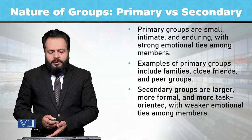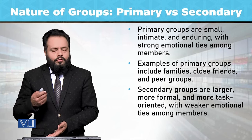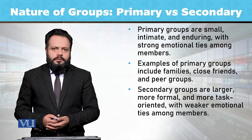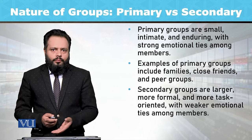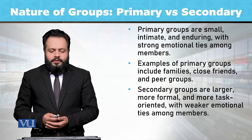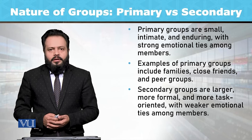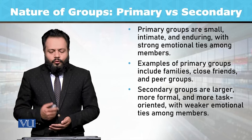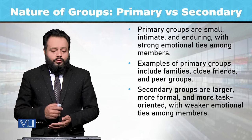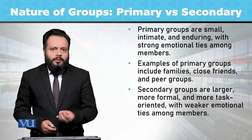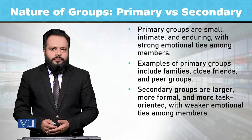For example, families, close friends and peer group — ये सारे primary group का हिस्सा होते हैं. इसी तरह से जो secondary groups हैं, these are larger, more formal and more task oriented with weaker emotional ties among group members.